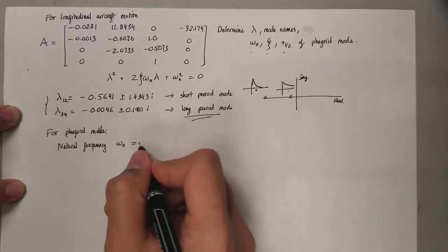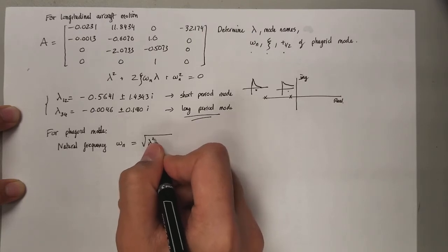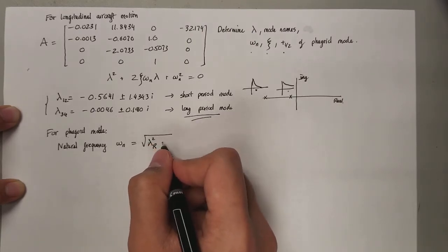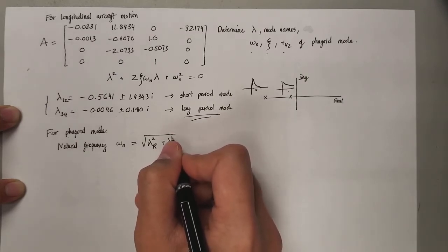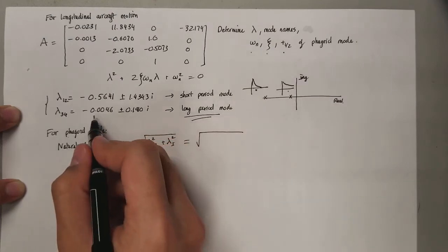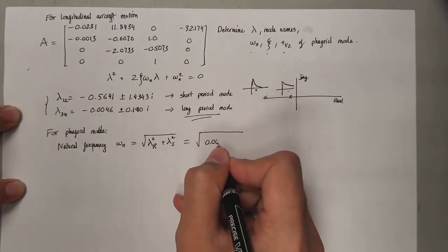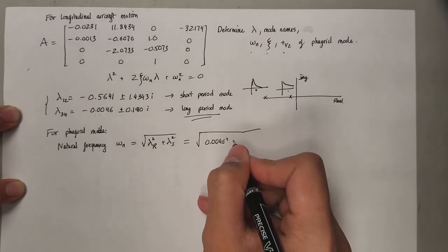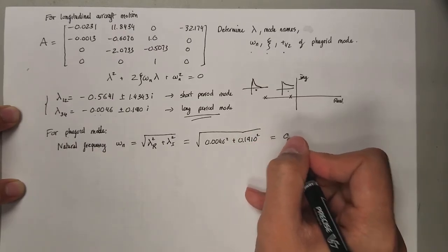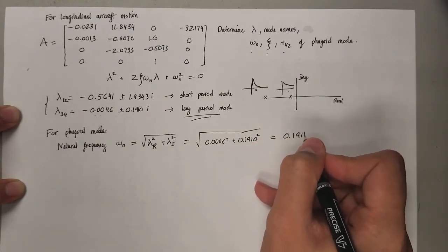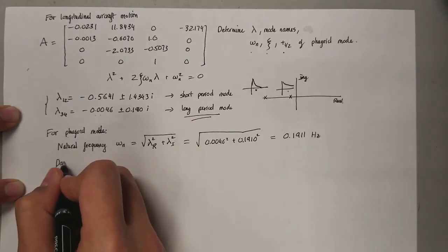By definition, it is just the square root of the square of the real eigenvalue component and the imaginary component of the eigenvalues. So it's going to be 0.0046 squared plus 0.01910 squared, and that's going to turn out to be 0.1911 radians per second.